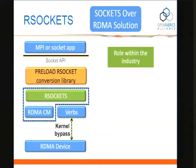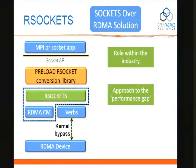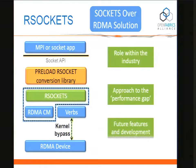I want to look at basically what role I was searching for with R sockets — kind of where it's at and what are its limitations. What approach I'm taking in terms of trying to get R socket performance to be completely on par with native verb applications. And what are the future features — what have I done since last year, and where do I see needs still existing for future development?